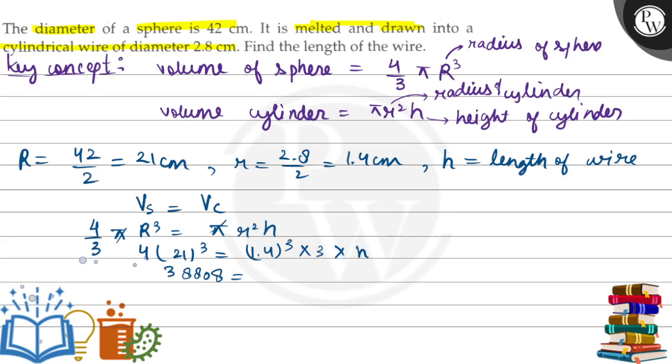Sorry, it won't be 38808. It will be 37044, and 1.4 squared will be equal to 1.96 times 3 times h. From here, we get the value of h as 63. So this is our final answer. The length of the wire will be equal to 63 centimeters.